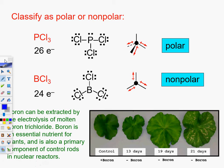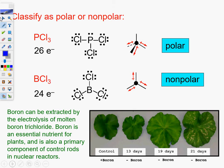So we've got non-polar. Here is a little thing that may just be on the AP exam. Boron can be extracted by the electrolysis of molten boron trichloride. Boron is an essential nutrient for many plants and is a primary component of control rods in nuclear reactors. I can see that coming into play sometime. It's just always something that you see on the big, long prompt. It means really nothing. But, okay. Moving on.